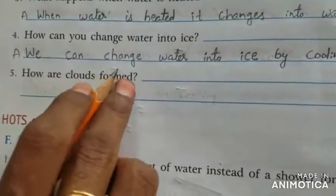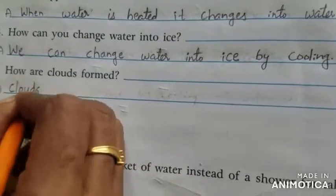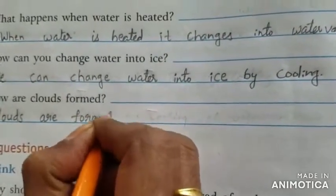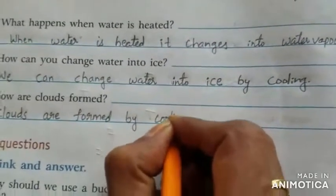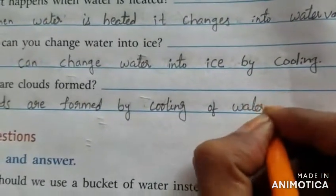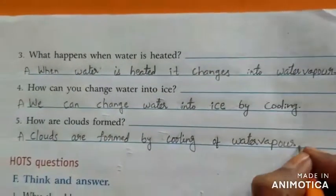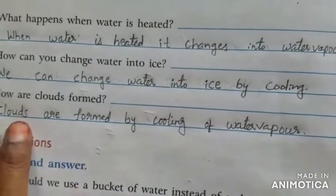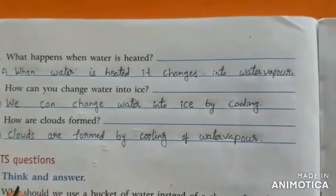The fifth question: How are clouds formed? Clouds are formed by the cooling of water vapor. When water vapor is cooled, it changes into clouds. This is all for today's session. Write these answers in your textbook. Thank you.